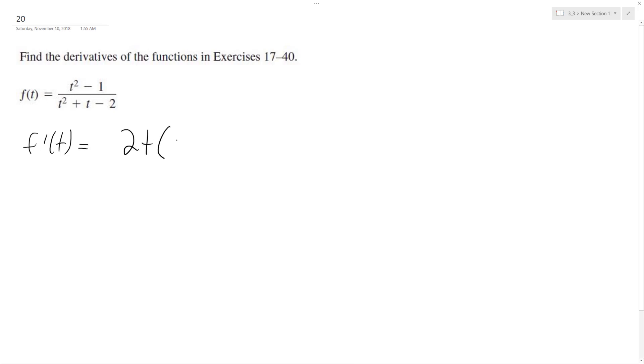so 2t, and then times the denominator, t squared plus t minus 2, minus, and then our numerator times the derivative of the denominator, which is going to be 2t plus 1. And all this over the denominator squared.